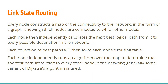Each node connected directly to others, forming neighbor relationships, can exchange link state information — that is, connectivity information — with each other, so that they can formulate and populate the routing table in each router.